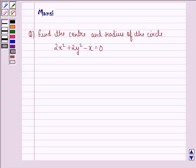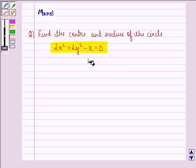Hello and welcome to the session. My name is Mansi and I'm going to help you with the following question. Find the center and radius of the circle: 2x² + 2y² - x = 0. Let us start with the solution to this question.